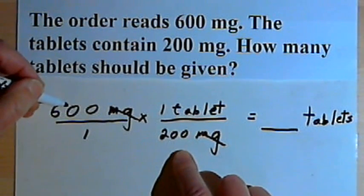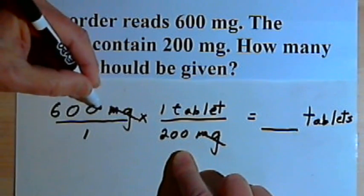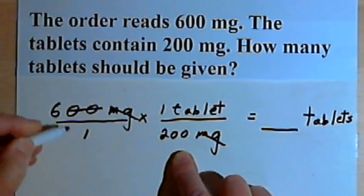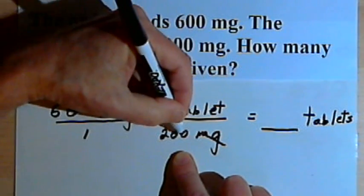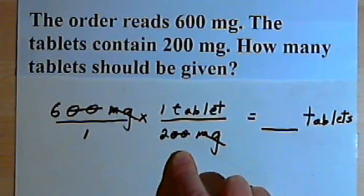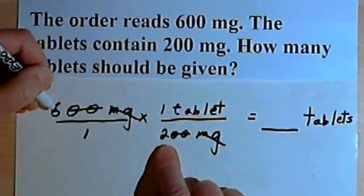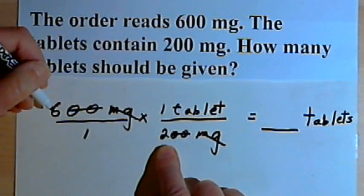I've got 600 and 200. So I know I can divide both of these numbers by 100. So let's turn that 600 into a 6 by crossing out the two zeros. Turn the 200 into a 2 by crossing out the two zeros. I've got a 6 and I've got a 2. I could simplify that. I could divide both of those numbers by 2.